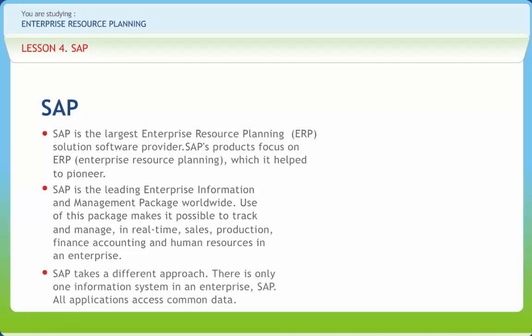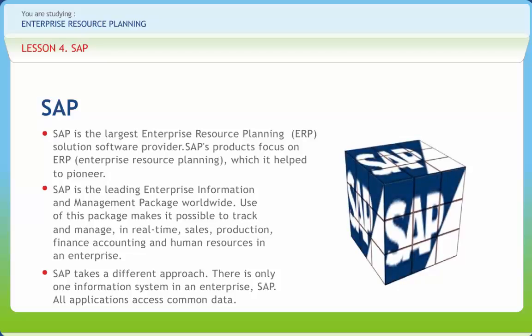SAP takes a different approach. There is only one information system in an enterprise: SAP. All applications access common data. Real events in the business initiate transactions. Accounting is done automatically by events in sales and production. Sales can see when products can be delivered, and production schedules are driven by sales. The whole system is designed to be real-time and not historical. SAP structure embodies what are considered the best business practices. A company implementing SAP adapts its operations to it to achieve its efficiencies and power. The process of adapting procedures to the SAP model involves business process re-engineering, which is a logical analysis of the events and relationships that exist in an enterprise's operations.